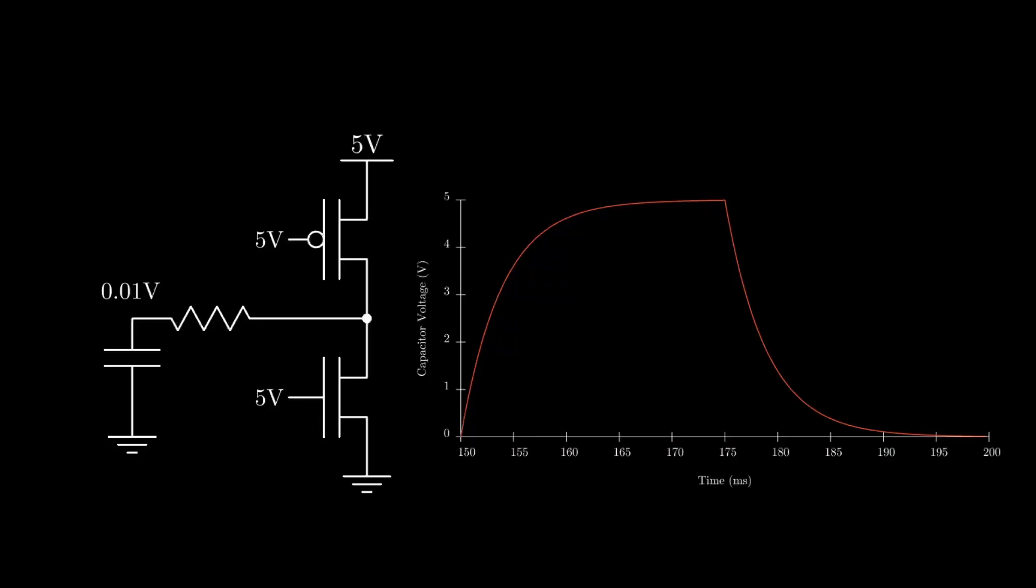If we look at the voltage across the capacitor we can see that it oscillates between zero and five volts. It's not a perfect square wave but we're getting close. What we need is some way to trigger a 5 volt input to the transistors when the capacitor voltage passes above a certain threshold and then trigger a zero volt input when the capacitor voltage drops below another threshold. Note that the square wave here is inverted compared to the capacitor voltage. This will be important later on.